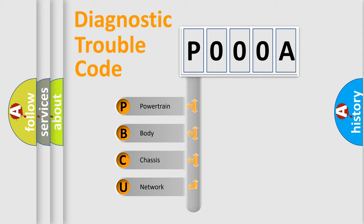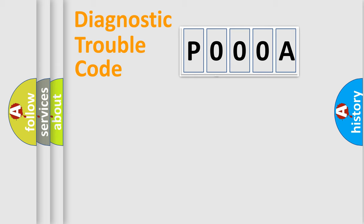We divide the electric system of automobile into four basic units: Powertrain, body, chassis, network. This distribution is defined in the first character code.